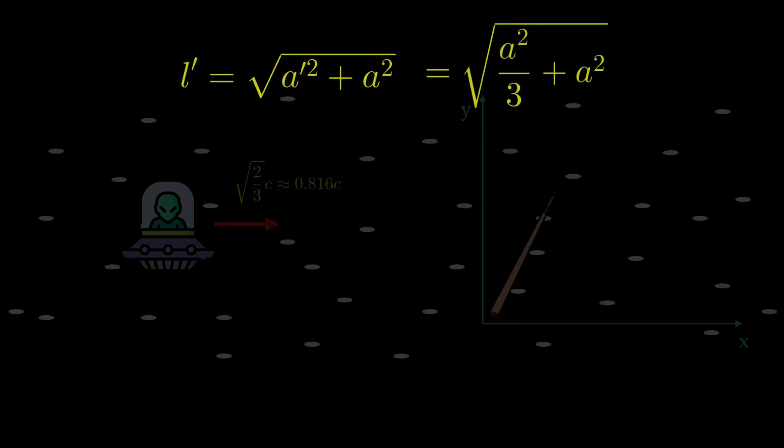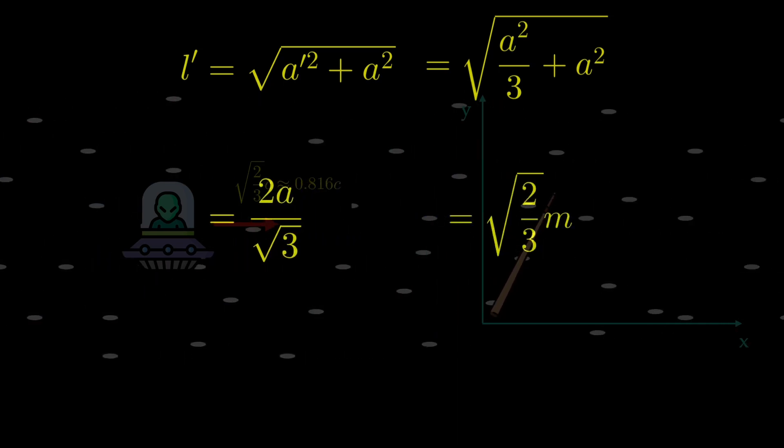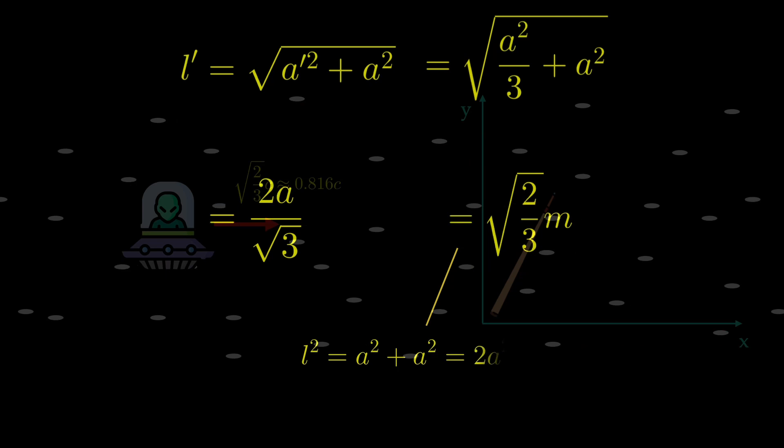Plugging that into our formula for l prime we get 2 times a divided by the square root of 3 which is equal to the square root of 2 thirds of a meter.